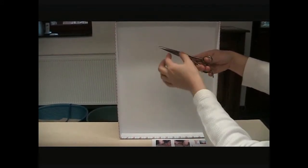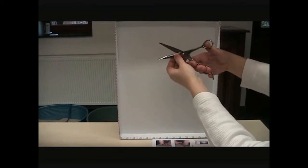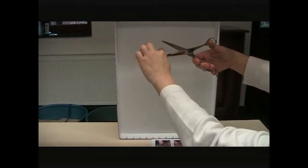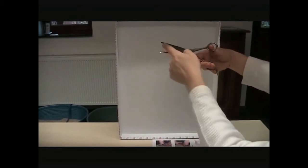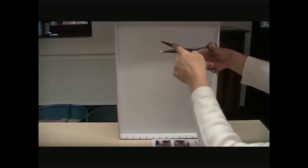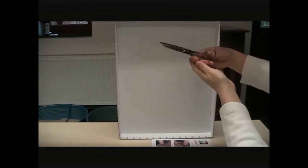Contrairement à si on faisait bouger les deux branches, on allait couper quelque part ici au milieu, mais en ne bougeant que le pouce, on est sûr de couper qu'à l'endroit où cette branche-ci se trouve.